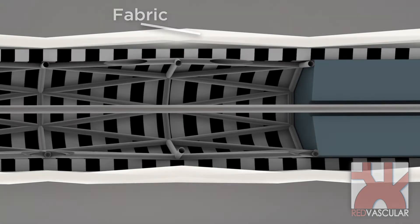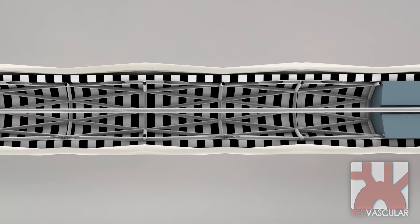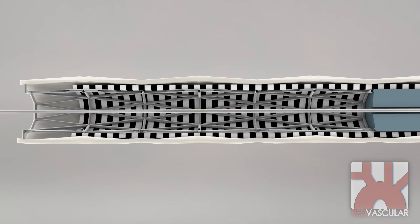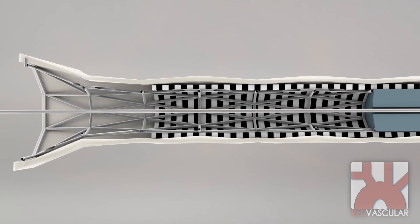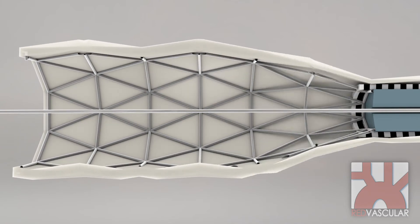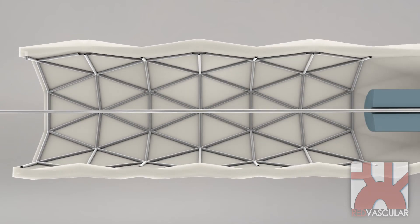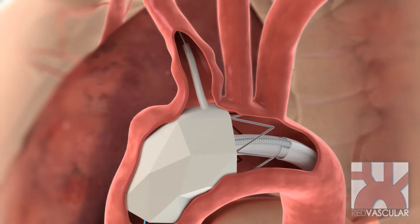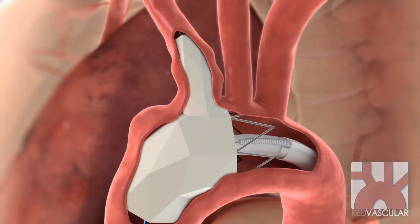As the branch sheath is retracted, the branch stent self-expands along with the outer fabric. Here, the branch graft expands as the branch sheath within is retracted.